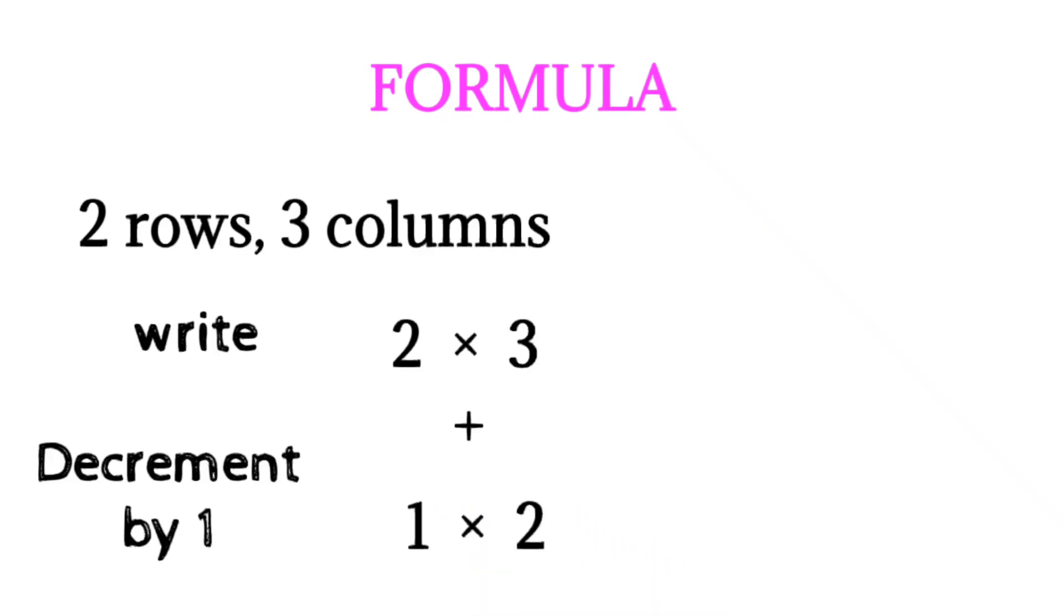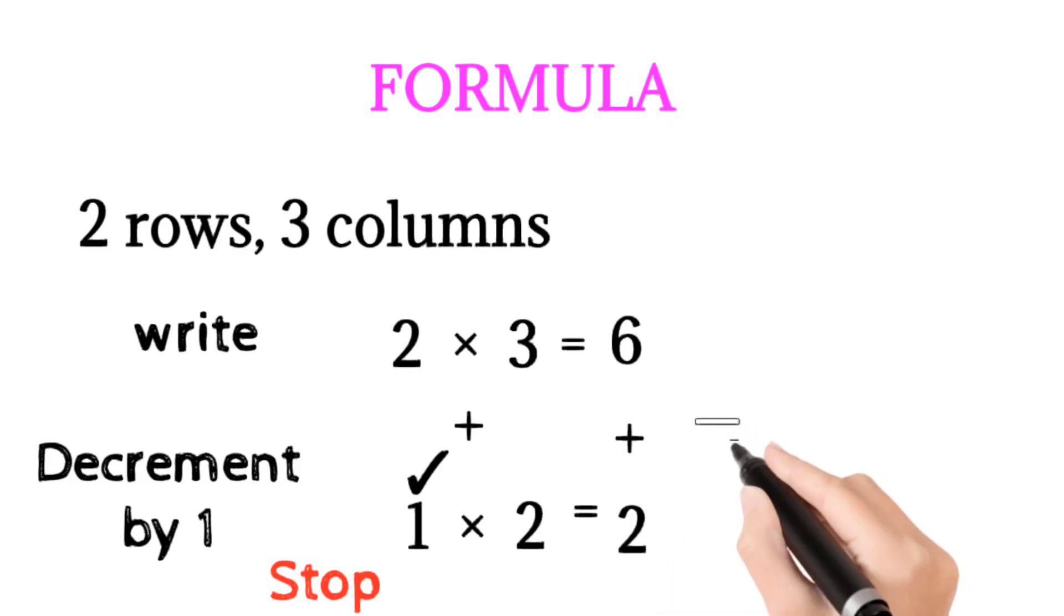Now we have 1, so we have to stop decrementing. So 2 into 3 is 6, plus 1 into 2 is 2. So 6 plus 2 is equal to 8, which is the same as the manual count.